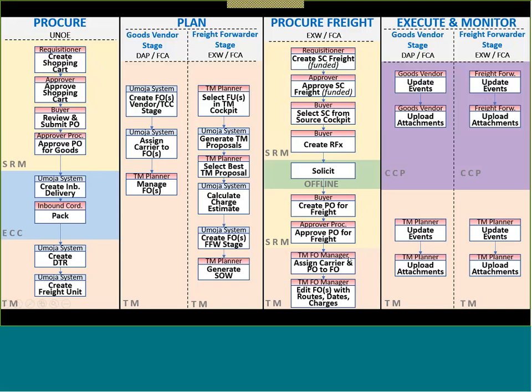As of now, we would not add an extra line into the shopping cart for goods — we'd have to create a brand new freight shopping cart just to obtain the freight. In the past, we would add just the freight line to the shopping cart; now we have to create one from scratch just for freight. The process is the same: create the shopping cart, get it approved, select it from the SOW cockpit in SRM, create the RFX, solicitation occurs, and then approve the PO for freight. This is where the TM FO manager would assign the carrier and PO to the freight order.